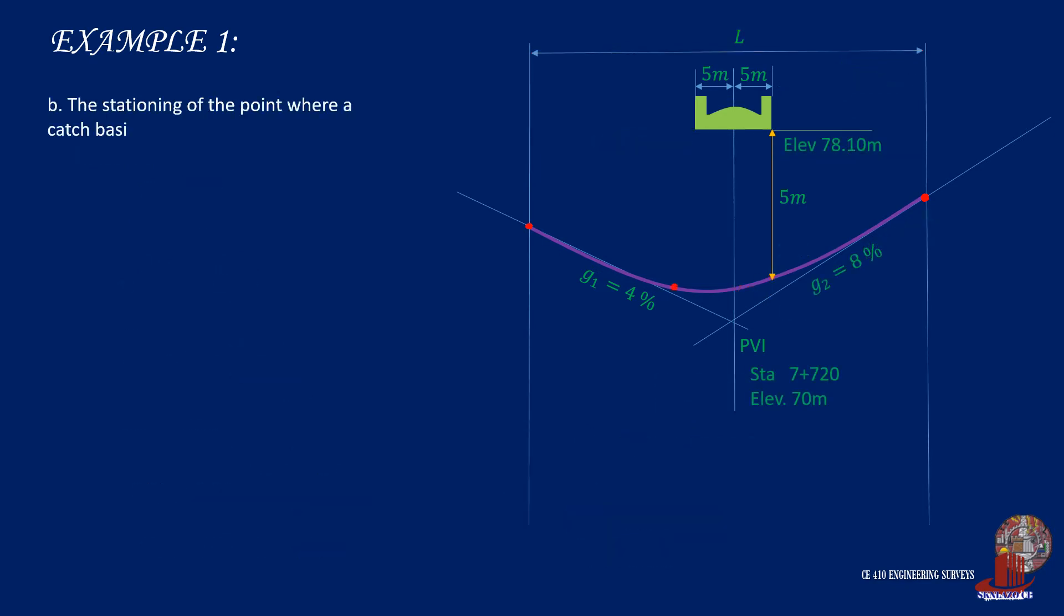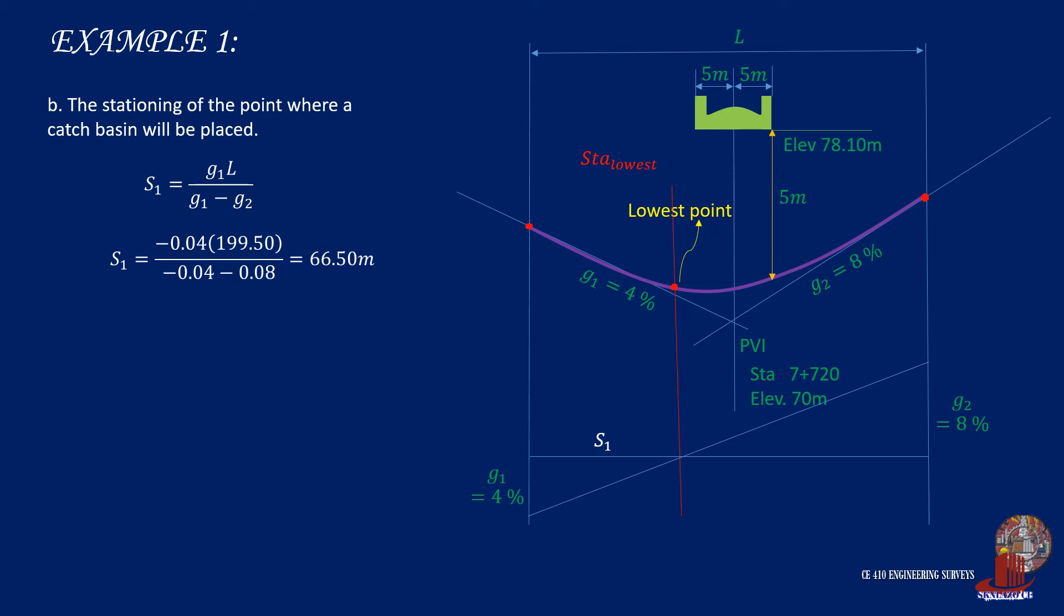The second requirement is the station of the point where a catch basin will be placed. The catch basin will be located at the lowest point of the curve, which can then be identified horizontally by using the formula of S1, which would yield the value of 66.5 meters. Since the only given station is at PVI, we use this point as the basis. Thus we need to get distance Z or the distance between the lowest point and PVI. So the lowest point of the curve is stationed at 7 plus 686.75.